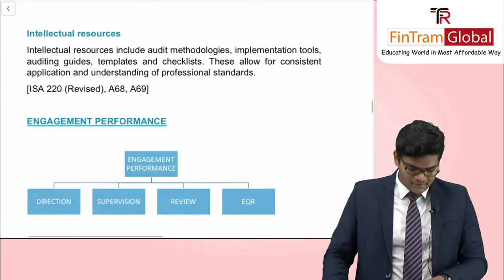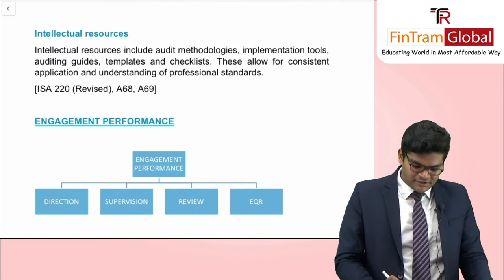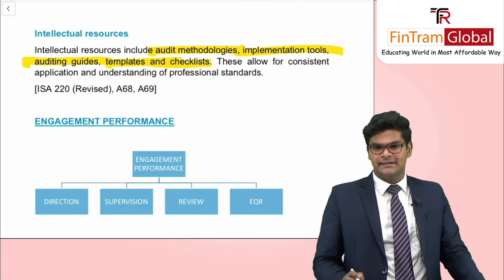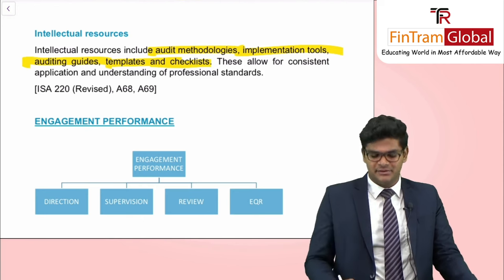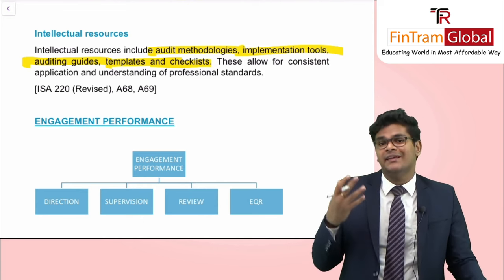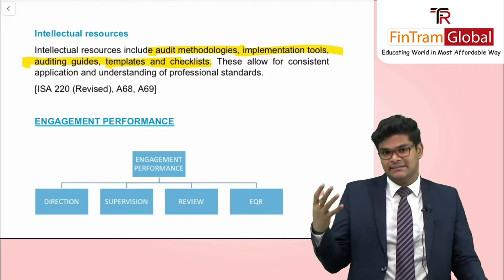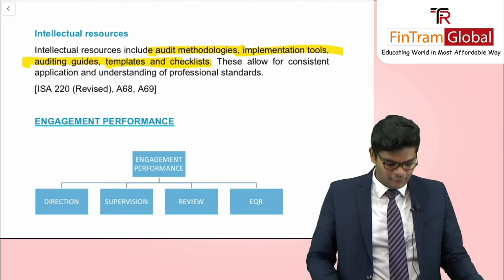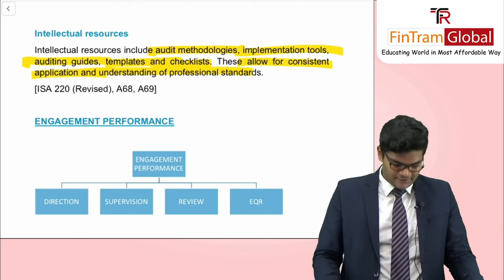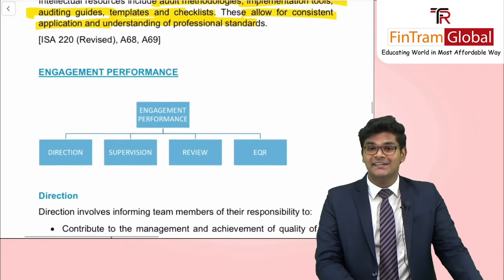We also have intellectual resources. Intellectual resources include audit methodologies, implementation tools, auditing guides, templates, and checklists. These are basically audit enablers — the approach the audit firm takes to conduct the audit, along with certain templates or forms used to create work papers or comply with regulations. These allow for consistent application and understanding of professional standards. Ensuring we have these resources is essential to providing quality service to our clients.